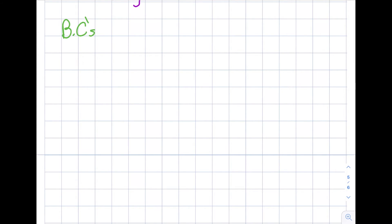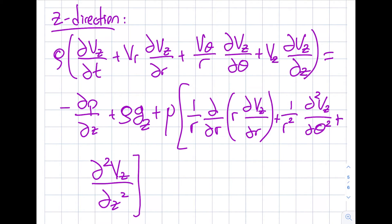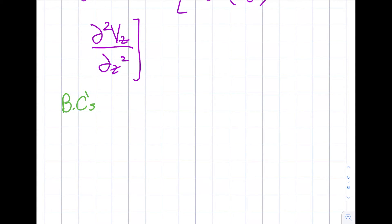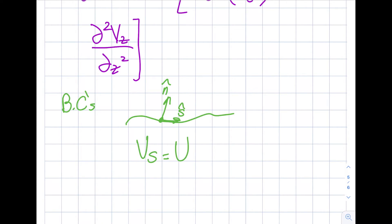Next I want to discuss boundary conditions, because when solving — say — the z-direction equation, I'll be taking integrals and obtaining integration constants that require boundary conditions. Consider a solid surface: using the no-slip condition, the tangential velocity component vs equals the velocity of the solid surface. If the solid is stationary, vs = 0. The normal component vn is typically zero since fluid cannot pass through a solid boundary.